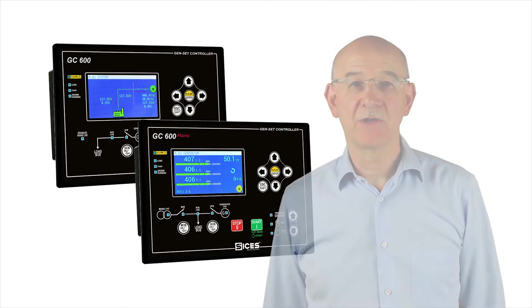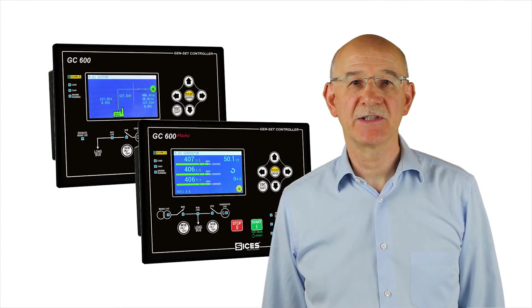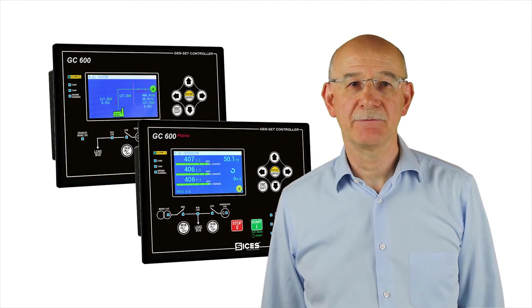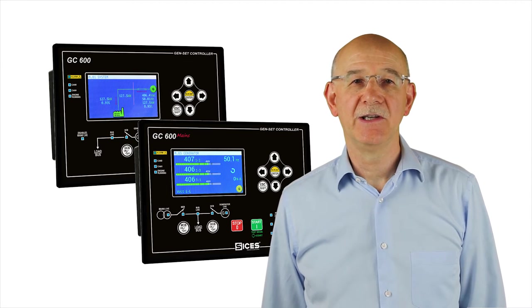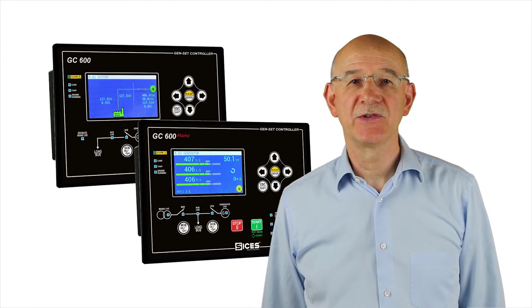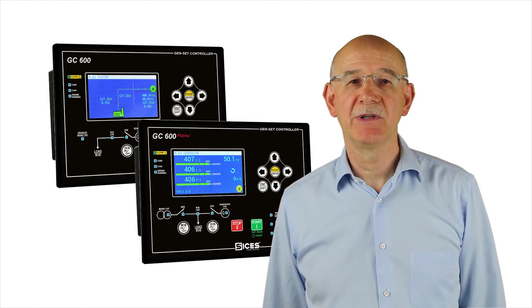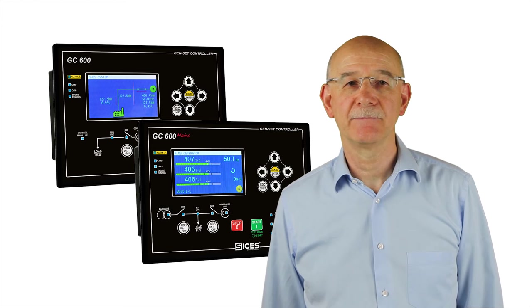This controller comes in two types: GC600 and GC600 Mains. The difference between the two is the panel layout on the front panel, with the GC600 Mains having a missing MCB button and a couple of LEDs.